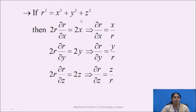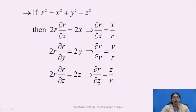Similarly, differentiating this equation partially with respect to y, we get 2r·(∂r/∂y) = 2y. Here x and z are treated as constant, and 2 cancels, which gives us ∂r/∂y = y/r. Similarly, differentiating partially with respect to z, treating x and y as constant, gives us 2r·(∂r/∂z) = 2z, which gives us ∂r/∂z = z/r.